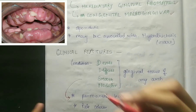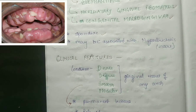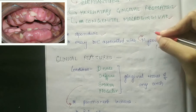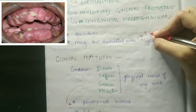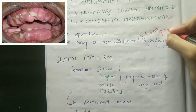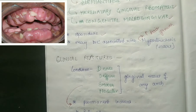Fibromatosis gingiva is sporadic and it may be associated with hypertrichosis. Hypertrichosis means increased hair growth. It is very rare that fibromatosis gingiva is associated with hypertrichosis, but in rare cases this association can occur.